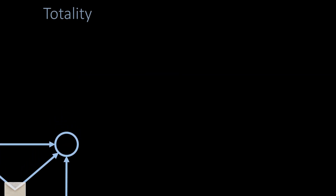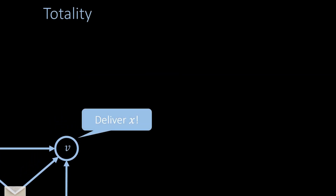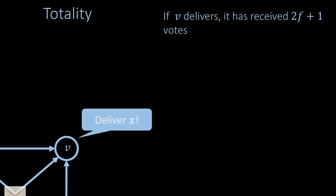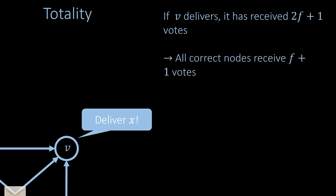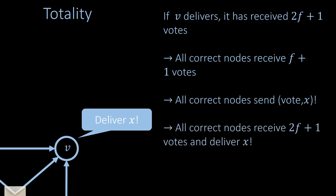Let's consider the totality property. If some correct node v delivers a value, it must have received 2f + 1 vote messages for this value. Since at most f of these messages might have come from faulty nodes, there must be at least f + 1 correct nodes that broadcast these vote messages. It follows that all correct nodes eventually receive at least f + 1 votes for this value, which causes all of them to broadcast vote messages themselves. So eventually all correct nodes receive at least 2f + 1 vote messages for this value and deliver it as well.